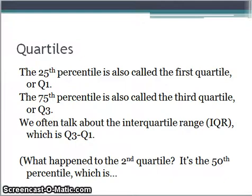Let's talk about some specific percentiles. The 25th percentile is called the first quartile, which is shown as Q1. The 75th percentile is the third quartile, which is Q3. And we talk about the interquartile range as well, which is just Q3 minus Q1. By the way, the second quartile would be the 50th percentile, which is the median.